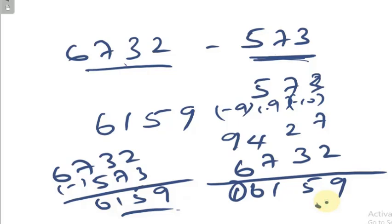From this we understand what subtraction through addition, or complementary addition, is. This is applied in how computers calculate numbers. Computers don't know how to subtract — they only do complementary addition. We will see more about that later. Thank you.